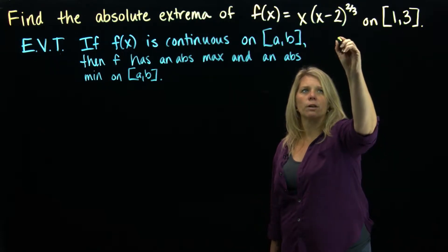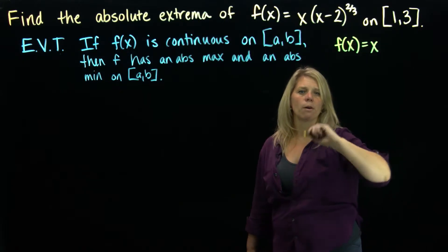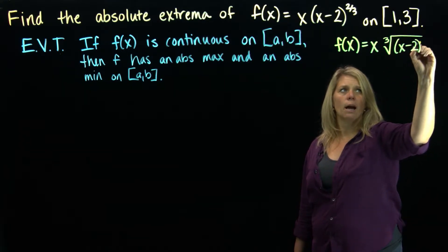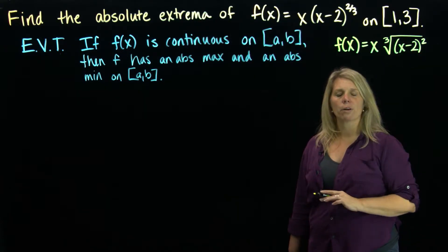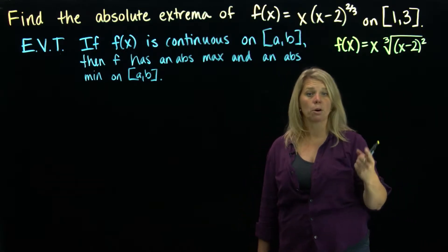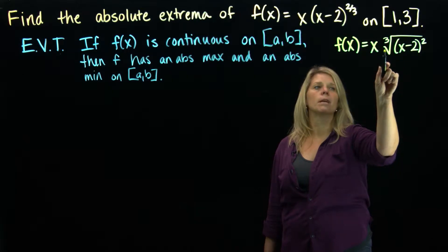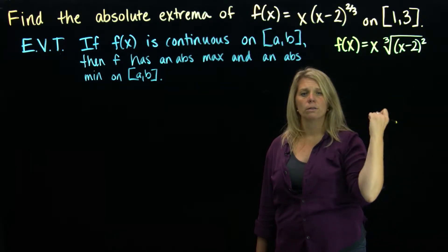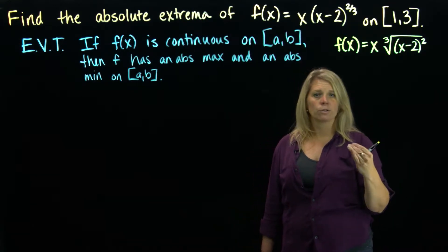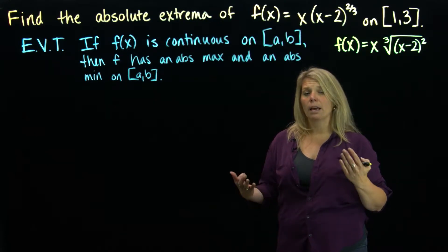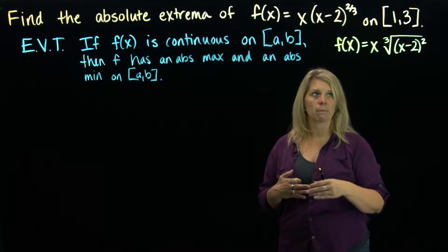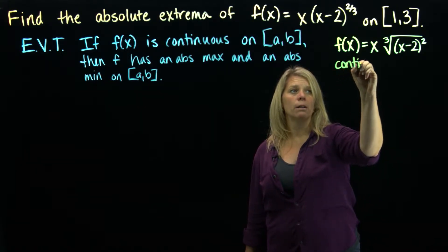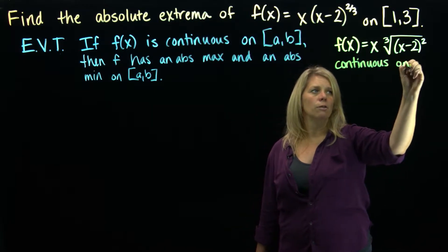I'm going to rewrite this f of x function with that fraction exponent in terms of what it actually means. A two-thirds exponent means the cube root of that expression inside, squared. When thinking about continuity, I'd want to check domain issues: things inside even-index radicals, denominators, logarithms, inverse trig functions. Because we have a cube root, we're okay. I don't have a piecewise function either, so this function is continuous everywhere, and specifically on this interval from 1 to 3.